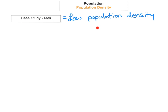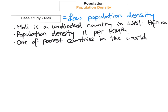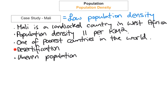The second case study is Mali, a country with low population density. Mali is a landlocked country in West Africa with a population density of only 11 people per square kilometer — compared to 25,000 in Calcutta. It is one of the poorest countries in the world. Desertification has caused major problems for farmers, and the population is very unevenly scattered, adding to the low population density problem.